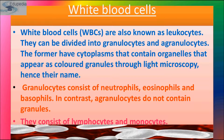WBCs are also known as leukocytes. They can be divided into granulocytes and agranulocytes. An average number of leukocytes in a healthy adult ranges from 5,000 to 9,000 per cubic millimeter of blood. In acute infections such as pneumonia, it increases up to 20,000 per cubic millimeter — this increase is called leukocytosis. If the number falls below 4,000 per cubic millimeter, it is called leukocytopenia, which is seen in tuberculosis.